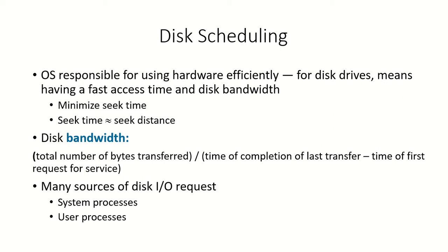The operating system is responsible for using hardware efficiently. This hardware could be related to the main memory, bus cycles, or the processor, but in terms of secondary storage — disk drives — using hardware efficiently means having a fast access time to a particular address on the disk and good disk bandwidth.